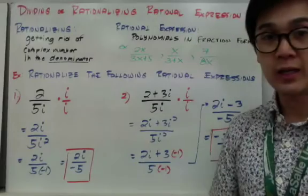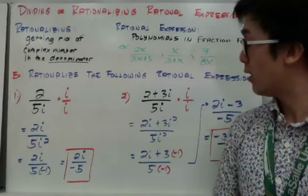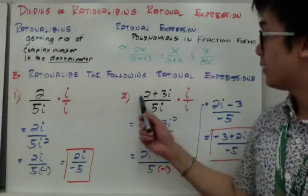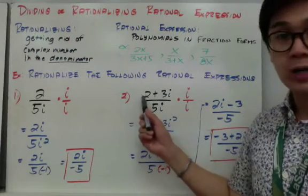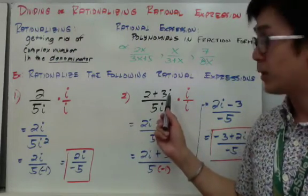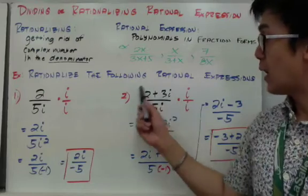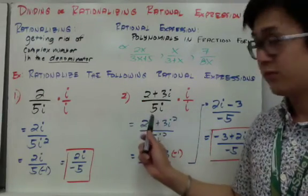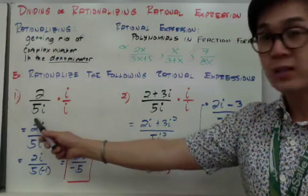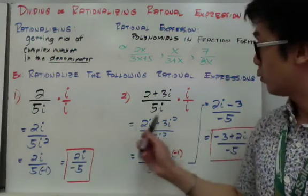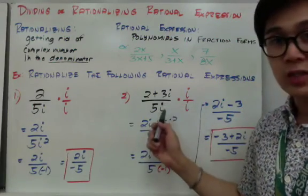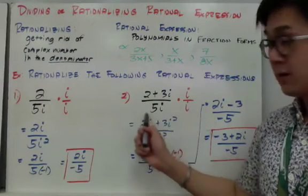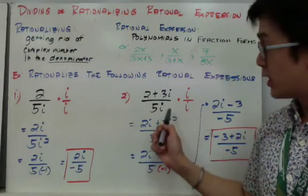For number two, it's another rational expression, but this time we have a real part and an imaginary part, which is a complex number in our numerator divided by the imaginary number 5i. Just like what we did in number one, we are multiplying the numerator and the denominator by i to eliminate i in the denominator.